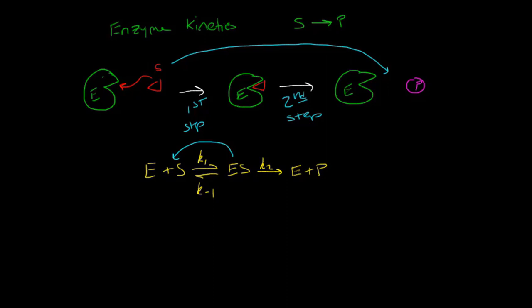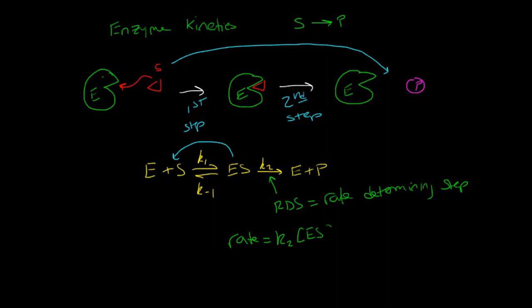This second step is the rate-determining step, abbreviated RDS. The rate-determining step governs the overall rate of our chemical reaction. Therefore, for an enzyme-catalyzed reaction, we can condense this whole mechanism into a rate law where the rate equals k2 times the concentration of our enzyme-substrate complex. This is the rate law for an enzyme-mediated conversion of a substrate to a product.